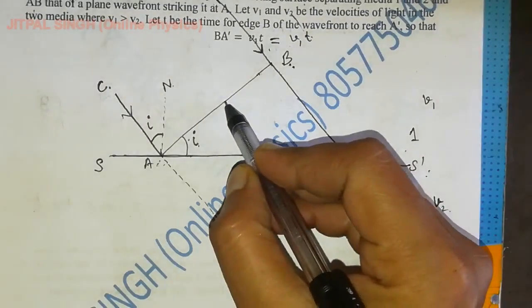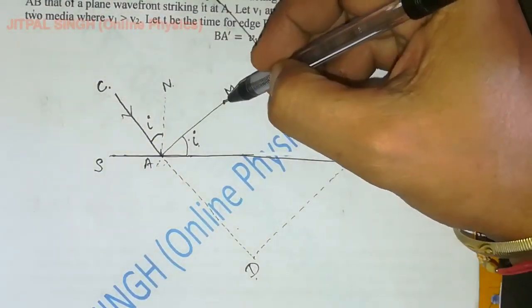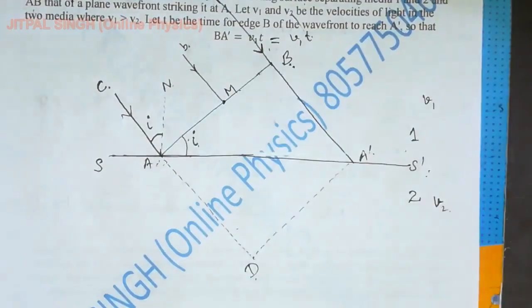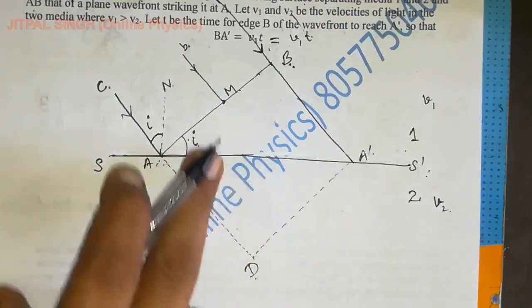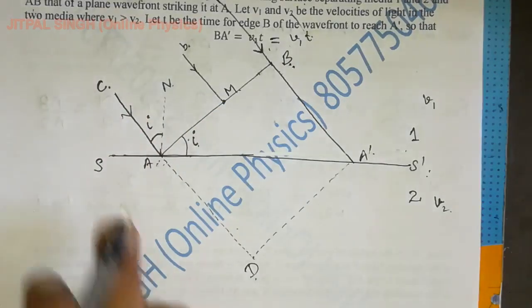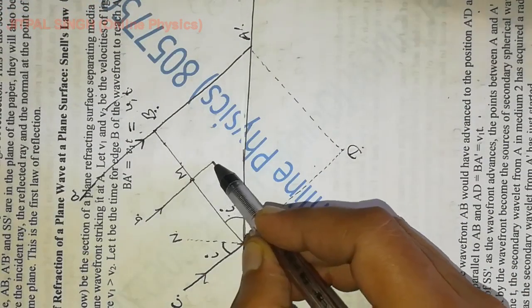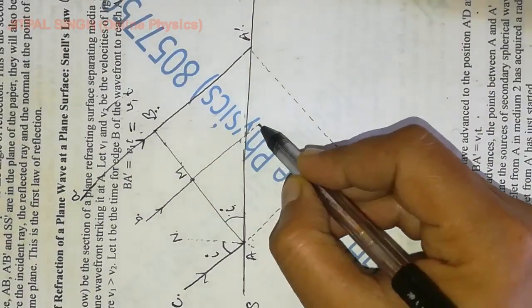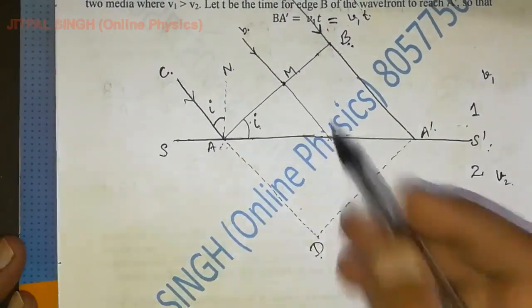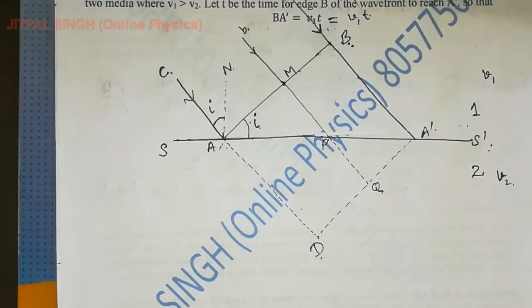Now if I take a point M here and draw the incident ray for it — BM is the incident ray. Just like BA', the wavelet from M advances, and in the absence of SS' it may reach a new position. I draw a thick line up to this point on the surface, then a dotted line. Let me name these points — suppose this point is P and this particular point is Q.